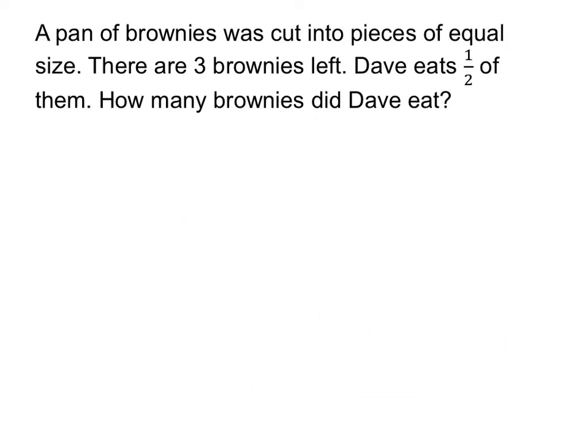Let's look at another example dealing with a pan of brownies. A pan of brownies was cut into pieces of equal size. There are three brownies left. David eats half of them. How many brownies did David eat? Let's draw a picture. We start off with a pan of brownies — let's draw a big box to represent our whole pan.